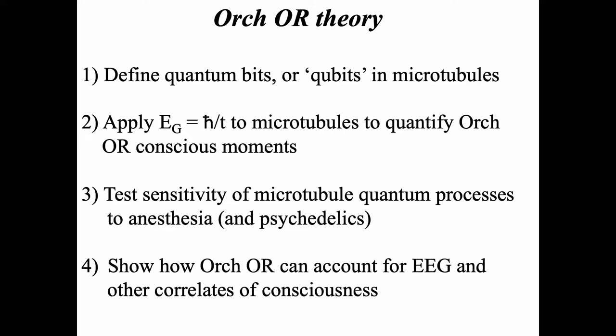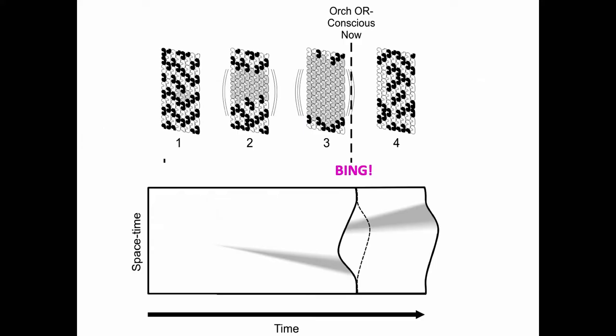We also wanted to test sensitivity of microtubule quantum processes to anesthesia — which would presumably dampen the quantum processes — and psychedelics, which might be expected to enhance the quantum process. And to show how Orch OR can account for EEG and other correlates of consciousness. The basic idea was that we'd have many microtubules with gray superposition evolving to reach threshold at time T, having a conscious moment — a conscious now — due to a process in the space-time geometry underlying this.